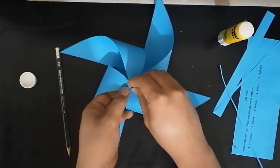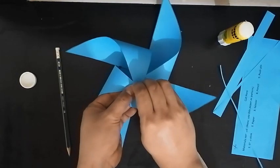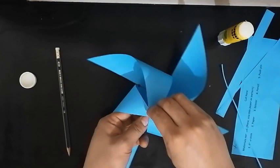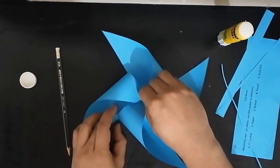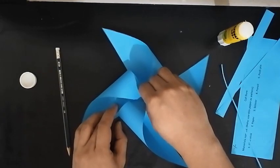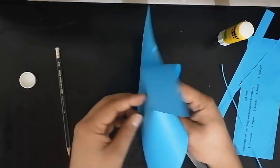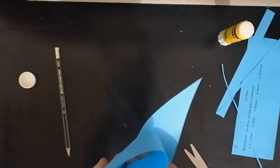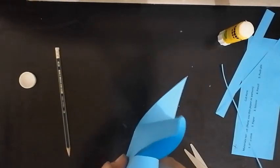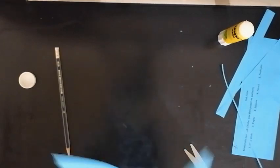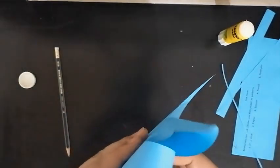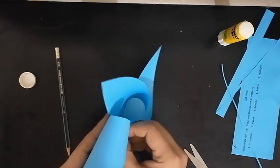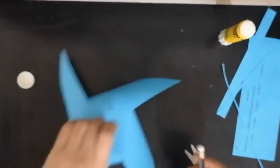Once you place a hole, try to push through at the center of the wheel. Make a hole also, look for the center of the wheel, and then put a hole. Now, once you put a hole, grab your pencil.